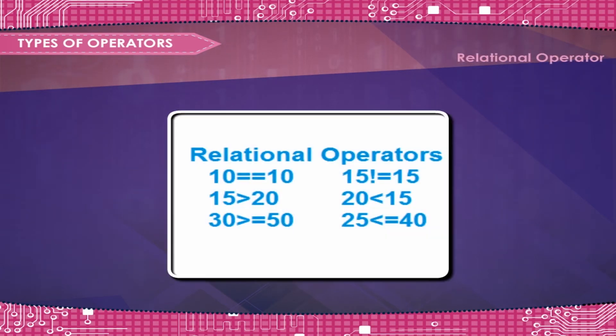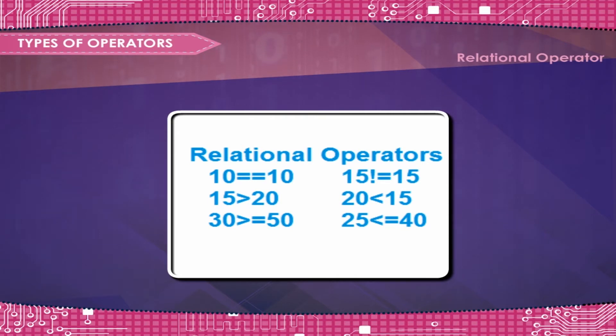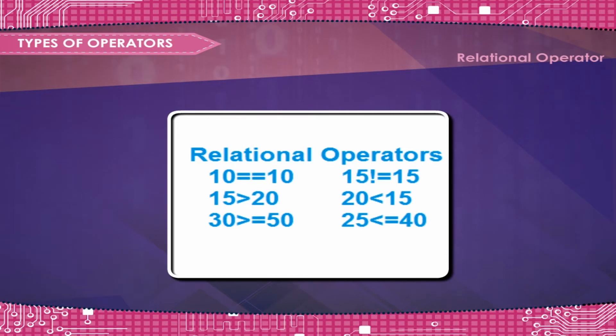Relational operators are used to compare two values. The result can be either true, 1, or false, 0.